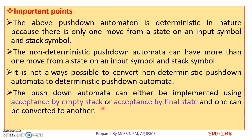The second acceptance method is acceptance by final state. So in these two cases — acceptance by empty stack, and acceptance by final state — we will accept a string in the pushdown automaton.